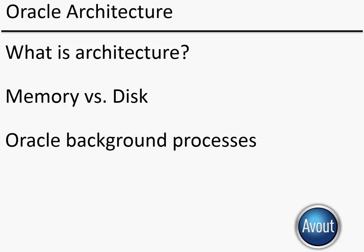We're also going to take a brief look at the Oracle background processes. The Oracle background processes are a whole bunch of programs that run in the background that make sure everything happening in memory and everything happening on disk stays synchronized. Understanding how those background processes do their job is absolutely essential for making sure your database is tuned properly.